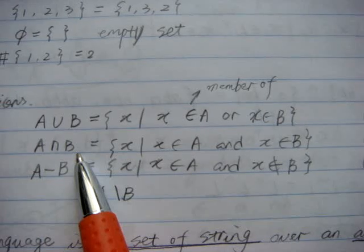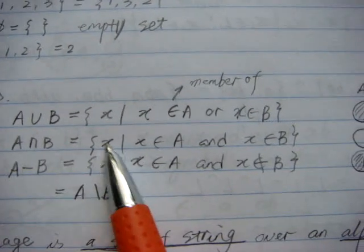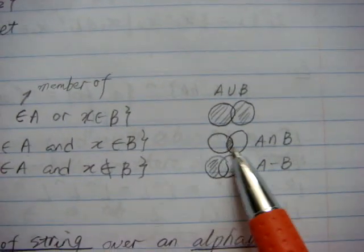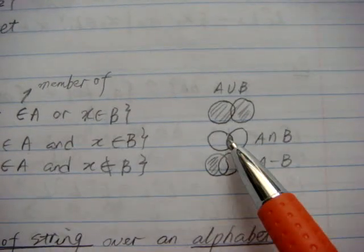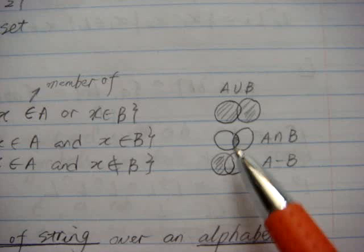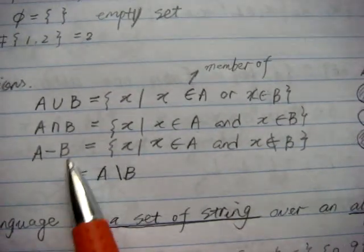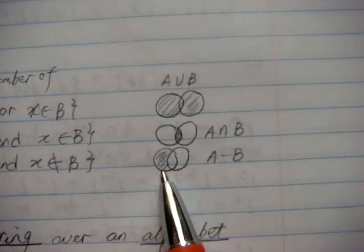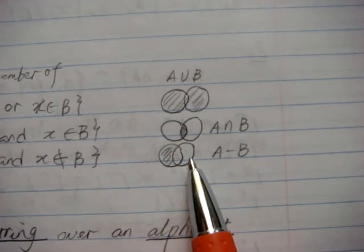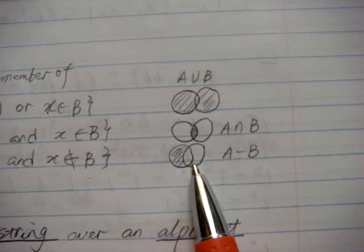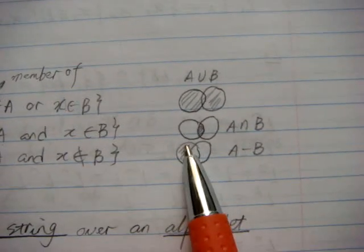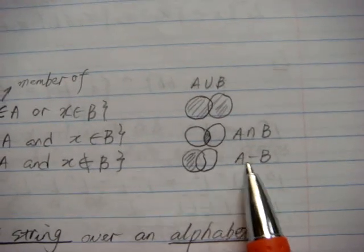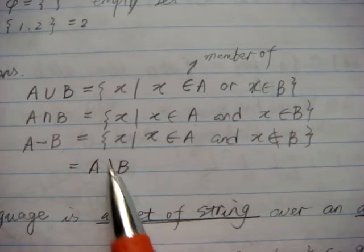Second, A intersection with B means we pick an element X that belongs to A and X belongs to B. Using a diagram, A intersect B is the section where they overlap. Next, A minus B means we pick an element which belongs to A but does not belong to B. So the part where A intersects with B is removed, and only the section outside B but also belonging to A represents A minus B, which can also be written as A dash B.